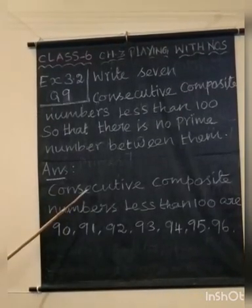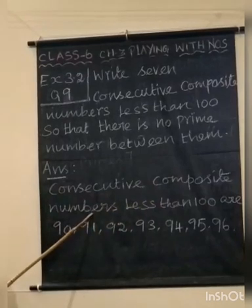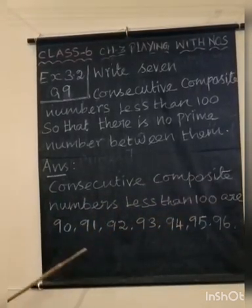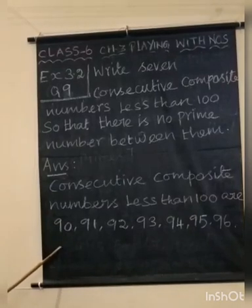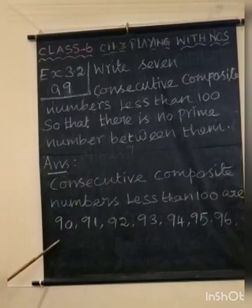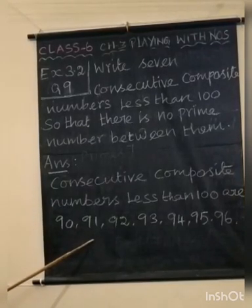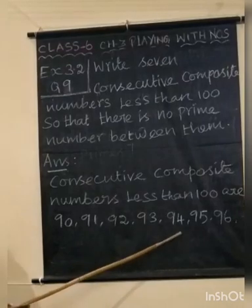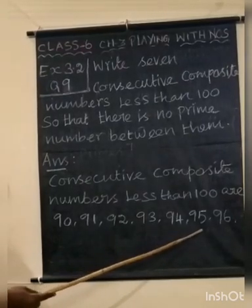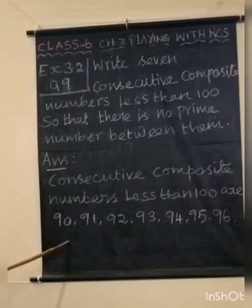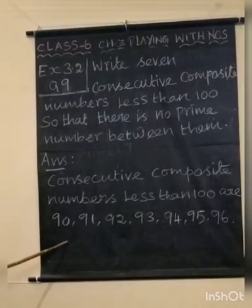Consecutive composite numbers less than 100 are 90, 91, 92, 93, 94, 95, and 96. These are composite numbers. Consecutive means continuous.